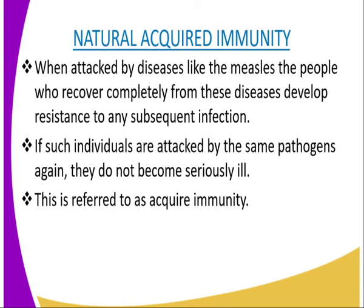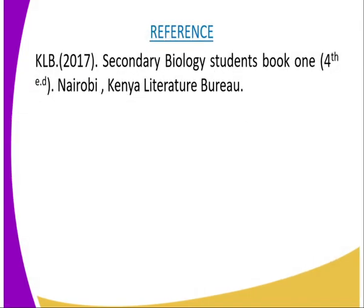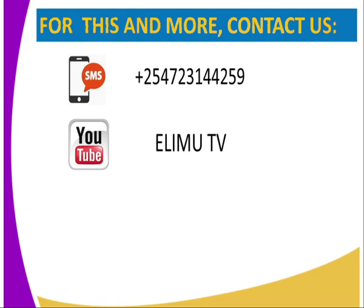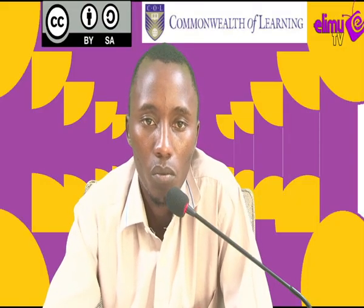Having covered all of that, we can have the following activity, whereby you are required to differentiate between natural acquired immunity and artificial acquired immunity. For more information on this lesson, you can refer to KLB Secondary Biology Students Book 1, the 4th edition, Nairobi, Kenya Literature Bureau. To get this lesson and other biology lessons, you can send us an SMS on the number appearing on our screen, or subscribe to our YouTube channel Elimu TV, our Facebook page Elimu TV, or tweet us at Elimu TV underscore Kenya. Thank you for watching and please subscribe to get more lessons.